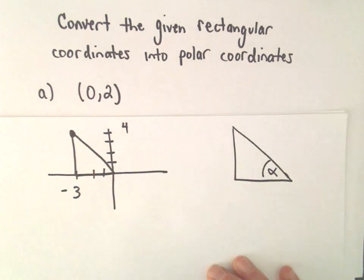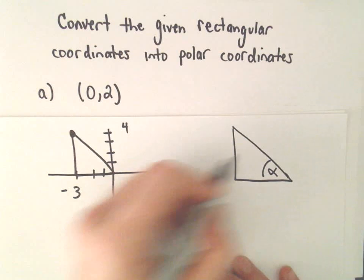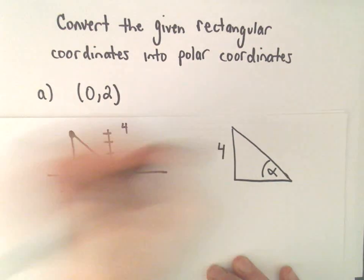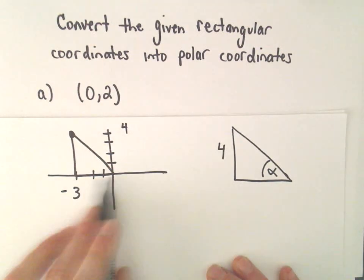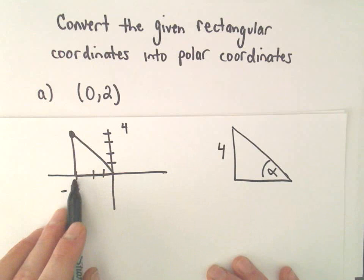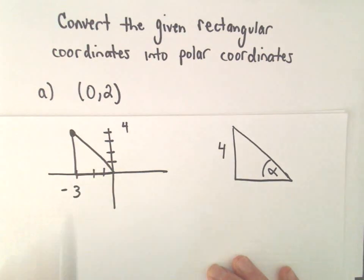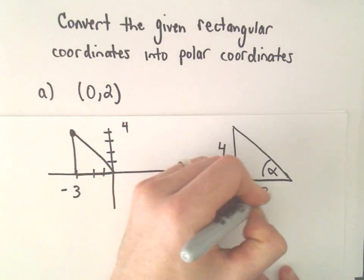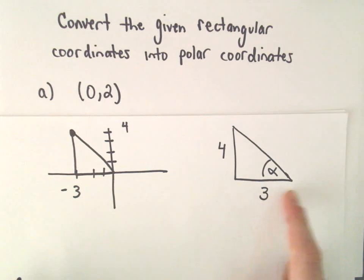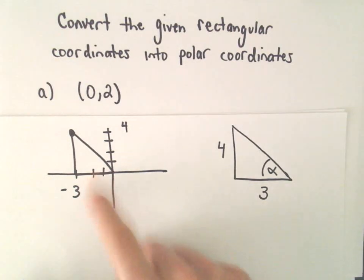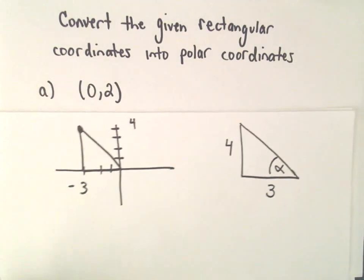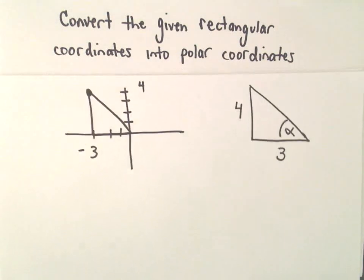And I'm going to do a couple things. I'm going to call this my angle alpha. So again, we went up 4 units. I know that we went negative 3 units to the left. Well, I guess we went 3 units to the left, which gives us negative 3. But on my triangle, I'm just going to label this as a length of 3. I can account for all the angles in just a second.